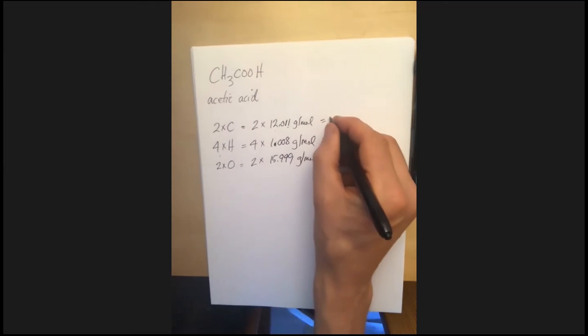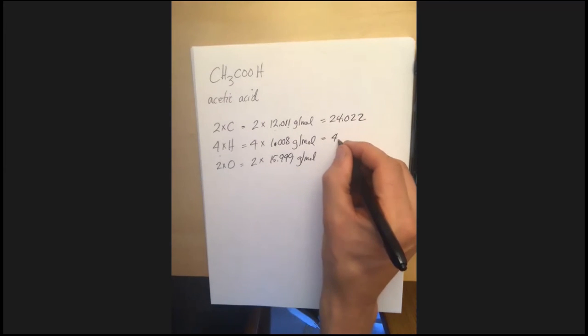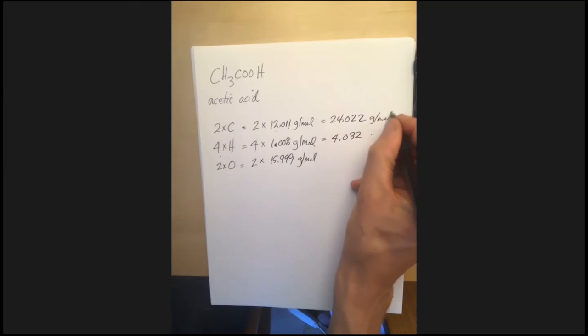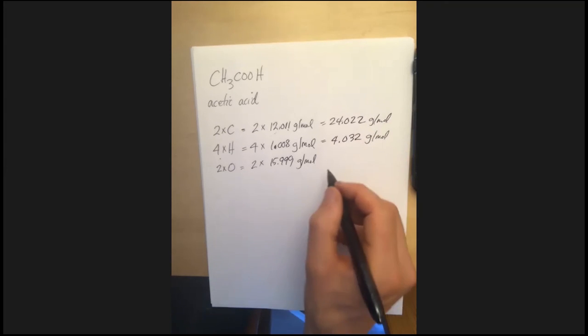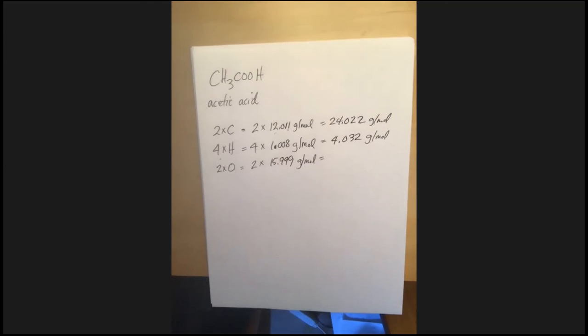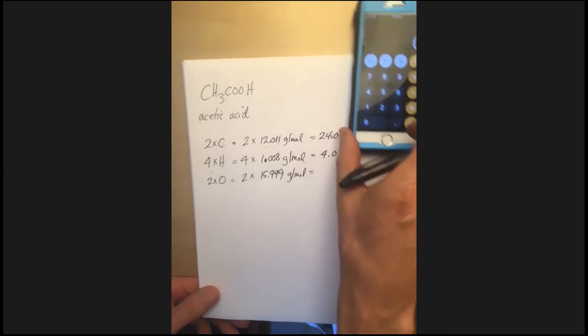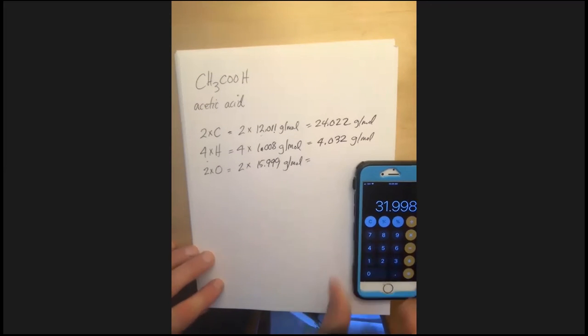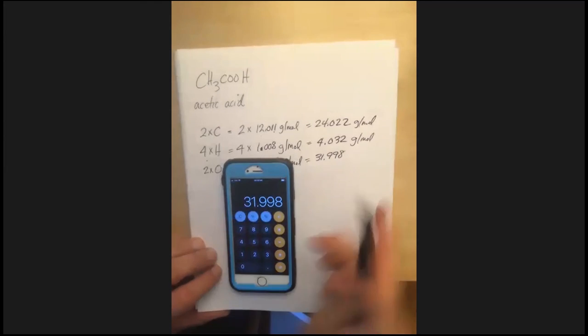So two times 12 is 24.022, that part I can do. Four times this number I can do, 4.032 grams per mole. And I can do 15.999 times two. I know it's going to be pretty close to 32. Should probably be able to do this, but apparently I can't. So two times 15.999, yeah, 31.998. I think I should be able to do that in my head. 31.998 grams per mole.